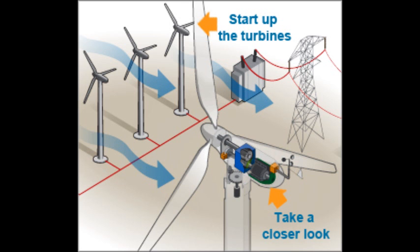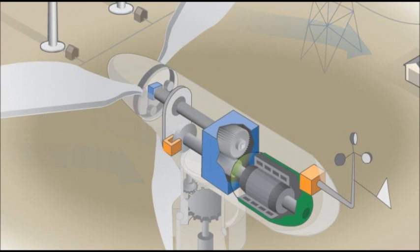Windmills, also commonly referred to as wind turbines, work the opposite of a fan. Instead of using electricity to make wind like a fan, windmills use wind to make electricity.